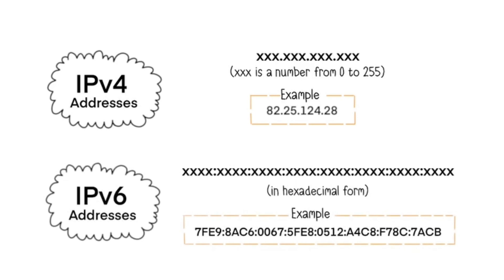To address this shortage, a new generation of addresses, the IPv6 standard, has emerged. IPv6 addresses are based on hexadecimal notation and have this form. All this is to say that we'll have approximately 340 sextillion addresses available — 340 followed by 36 zeros. Yes, it's enormous. I don't think we'll have an IP address shortage anytime soon.